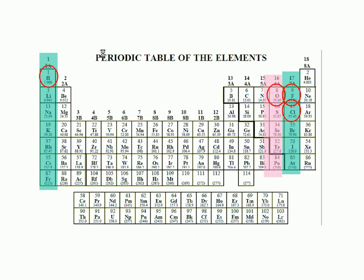Oxygen belongs to group 6A, therefore each oxygen atom has six valence electrons. Finally, nitrogen and phosphorus belong to group 5A, therefore each atom of nitrogen or phosphorus has five valence electrons.